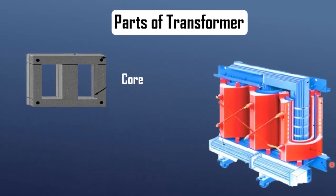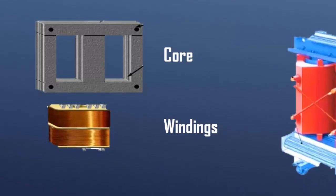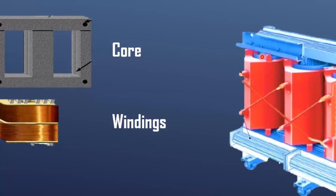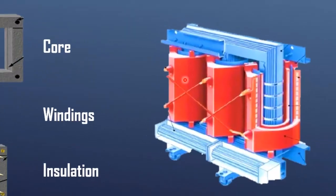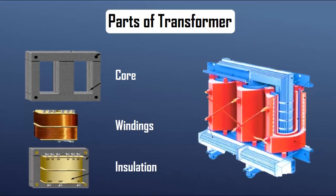A transformer has three main parts. The core, made of magnetic material, serves as the path for flow of the magnetic flux. The windings, which are coils of conductive material, one called the primary winding and the other the secondary winding, and insulation, which prevents short circuits between the windings and the core.